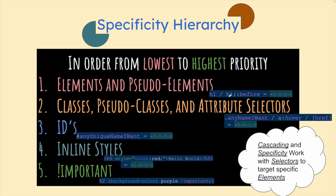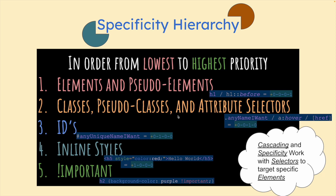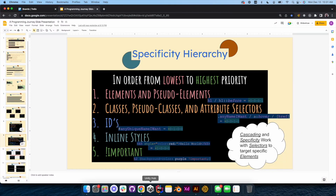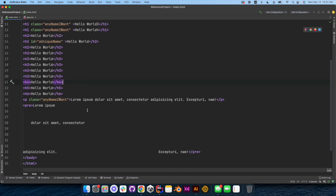We won't really touch on pseudo elements, pseudo classes, or attribute selectors right now. We're going to focus mainly on element, class, ID, inline, and important. I want you to see basically how this is going to work. Let me jump over into our HTML.